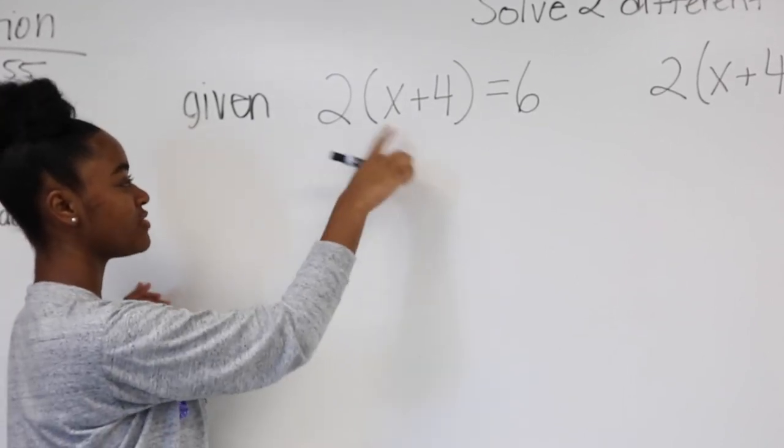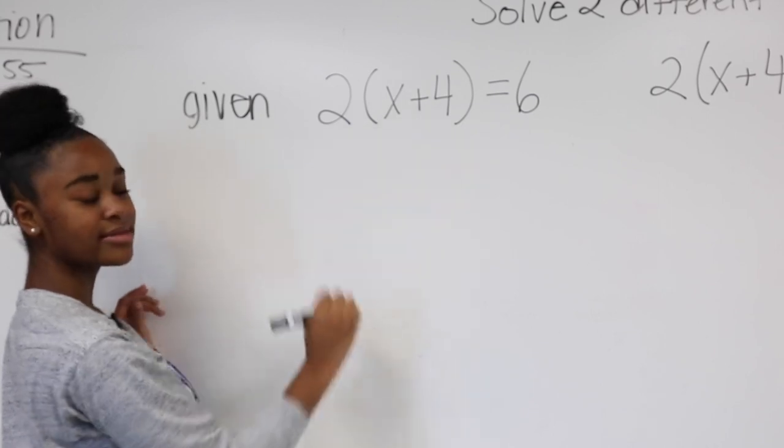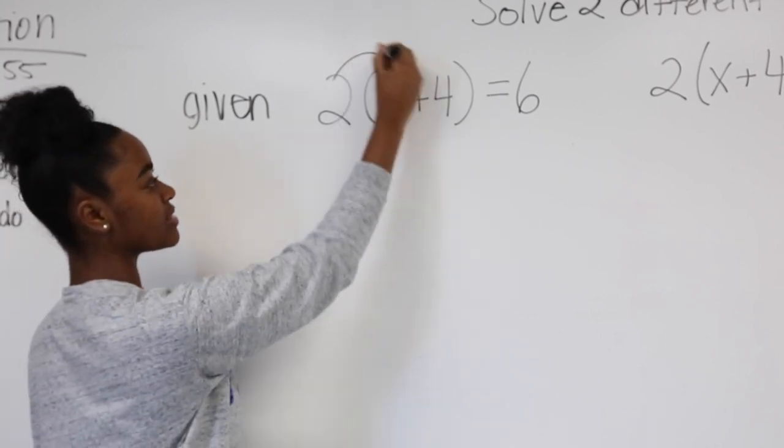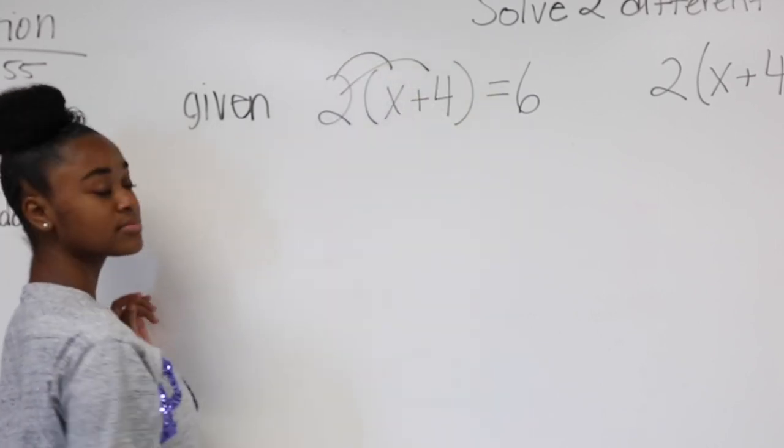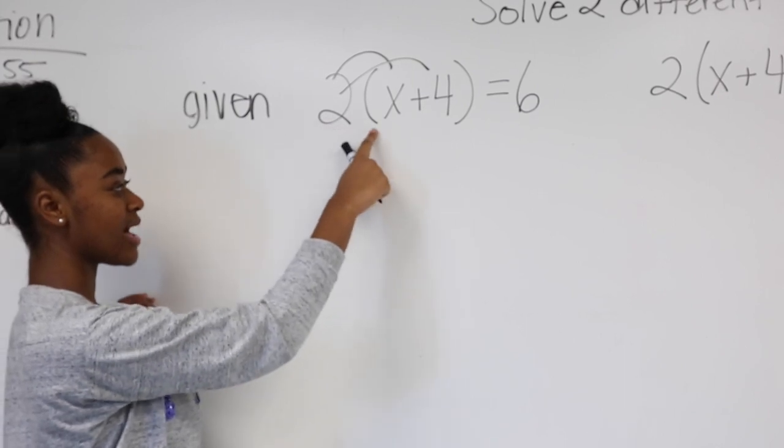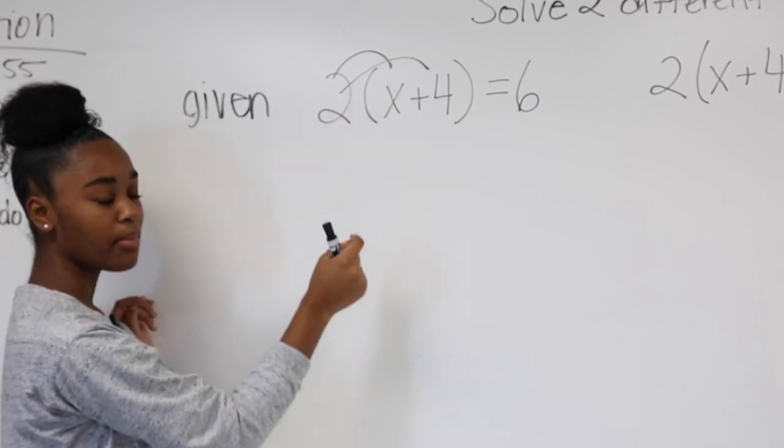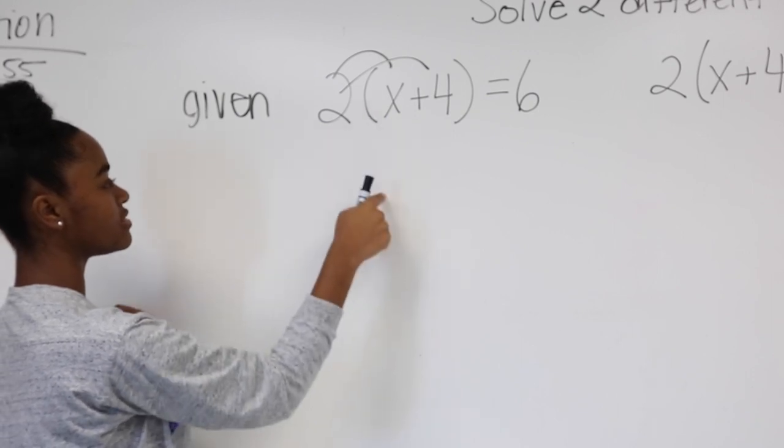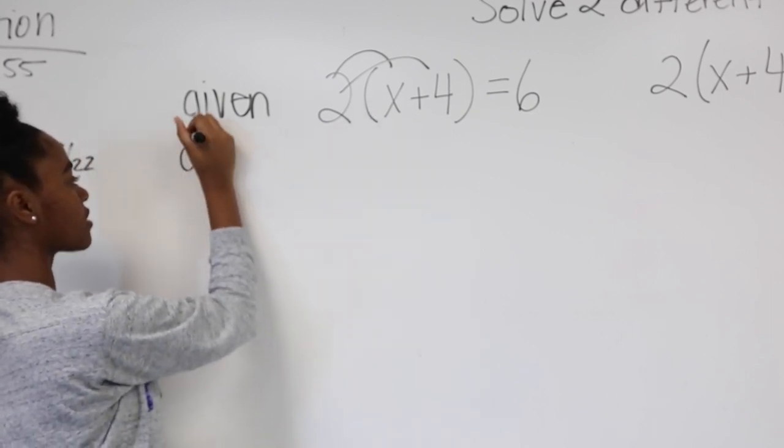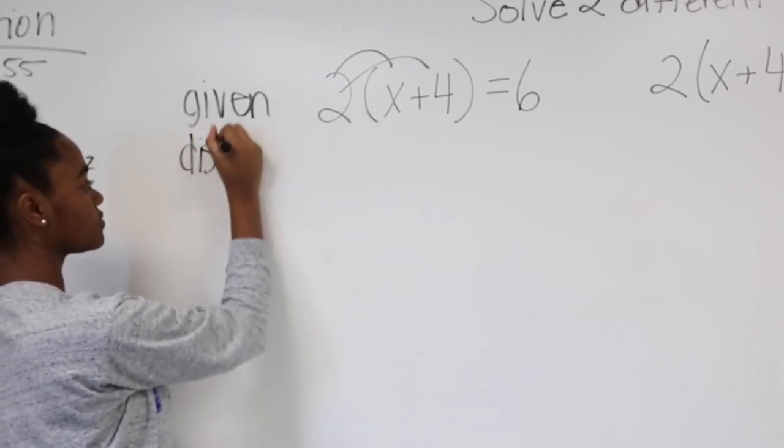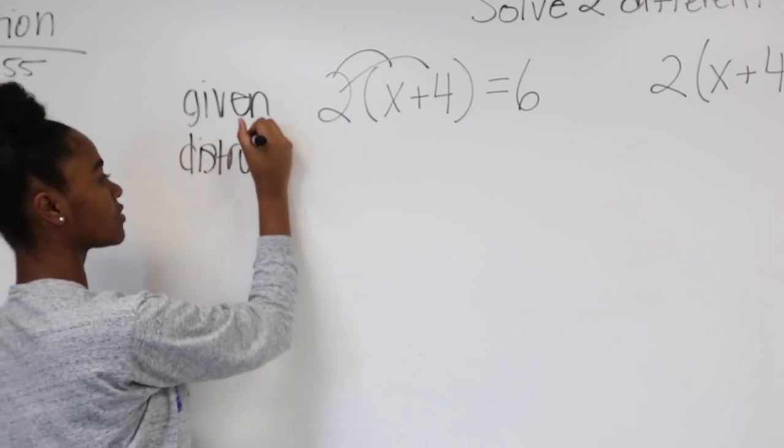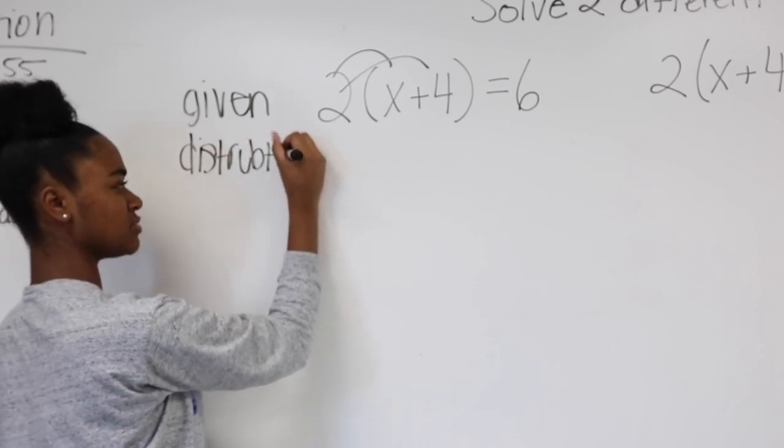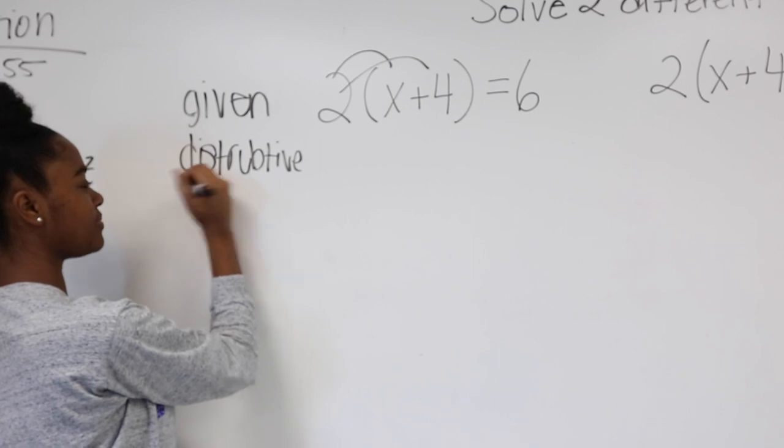Second, you want to distribute the two to both sides. So it'll be like that and that. Since the two is beside the parentheses, it's multiplication. So you just distribute that. That's going to be your distributive property.